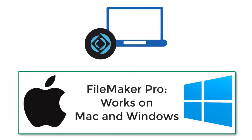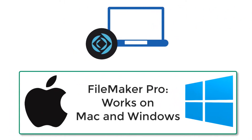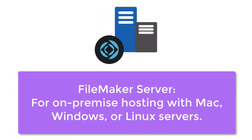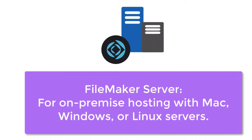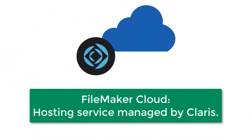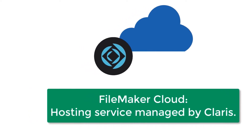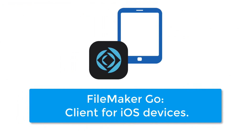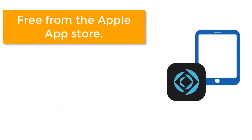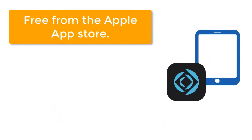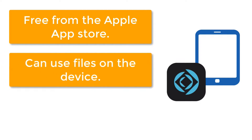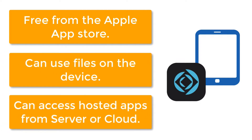FileMaker Pro runs on Mac and Windows platforms. FileMaker Server is the on-premise server software that works on Macs, Windows, and also Linux-based systems. There's also the FileMaker Cloud Service, which is professionally managed by the engineers at Claris Corporation. If you want to access a FileMaker custom app on an iPhone or iPad, you'll want to use FileMaker Go, available on Apple's App Store, which allows you to access a local or shared custom application from FileMaker Server or FileMaker Cloud.